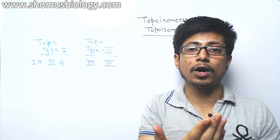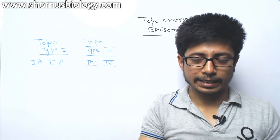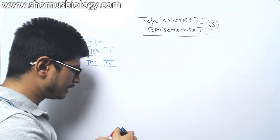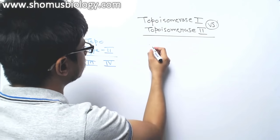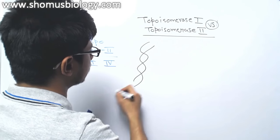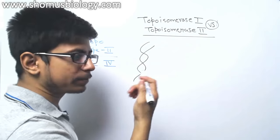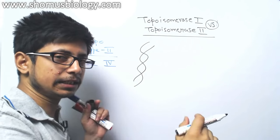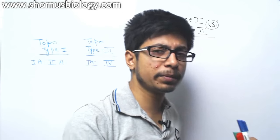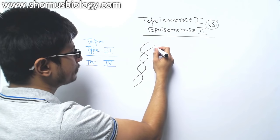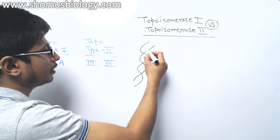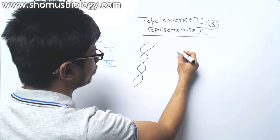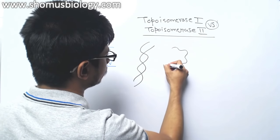The major function of the topoisomerase enzyme is to unwind or rewind the DNA — meaning underwinding or overwinding the DNA. You know the DNA double helix structure, two strands wrapped around one another. When we talk about linear DNA it is not much of a problem, but when we talk about circular DNA, what happens during the process is different.